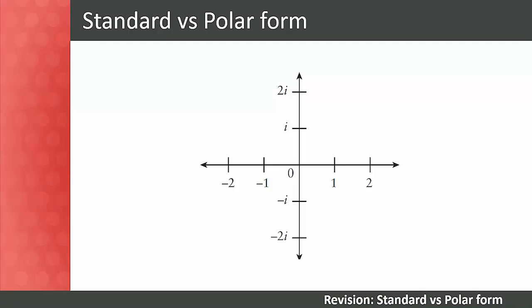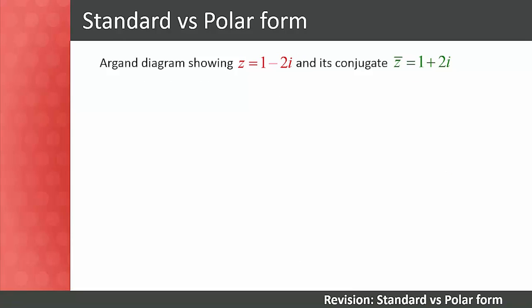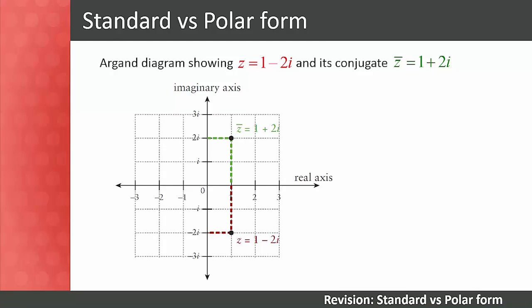Before we start manipulating polar form, let's backtrack and do some revision. What is polar form and how does it differ from standard form? Your students should remember from level 3 that we can represent complex numbers on a Cartesian plane. Real numbers are represented on the horizontal axis and imaginary numbers on the vertical axis, and we call this a complex plane. When complex numbers are represented on a Cartesian plane we call it an Argand diagram. Here's an Argand diagram representing z equals 1 minus 2i and its conjugate z equals 1 plus 2i.